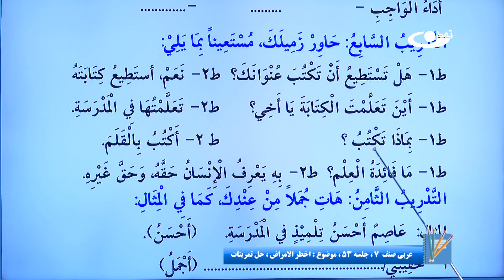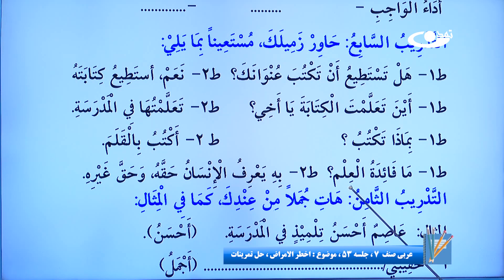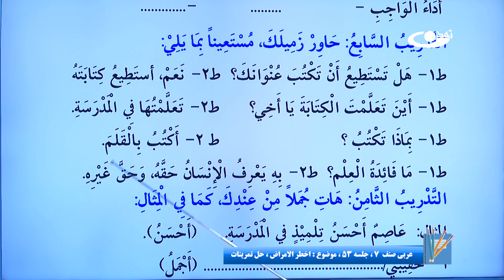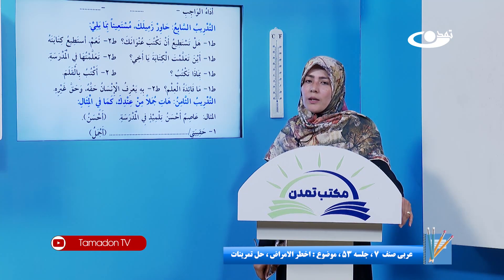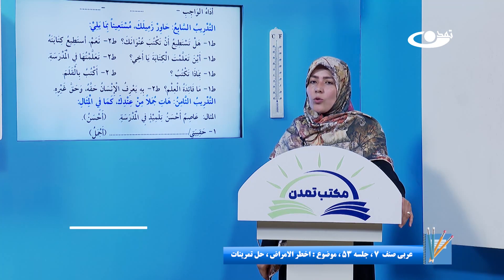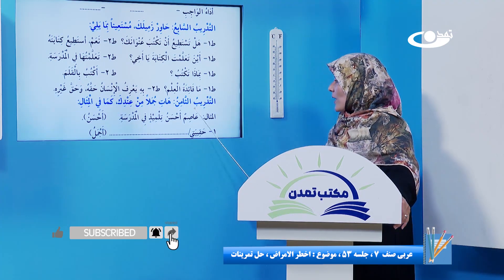«تعلمتها فی المدرسة» - آموختم آن را یعنی کتابت را در مدرسه. «بم تکتب؟» به وسیله چه چیزی می‌نویسی؟ «أکتب بالقلم» - می‌نویسم به واسطه قلم. «ما فائدة العلم؟» چیست فایده علم؟ «به یعرف الإنسان حقه و حق غیره» - به واسطه علم می‌شناسد انسان حق خودش را و حق دیگران را. کسی که علم بیاموزد با حقوق آشنا می‌شه و در سایه رعایت حقوق، جامعه روابط اصلاح می‌شه و زندگی‌ها به خوبی پیش می‌ره.